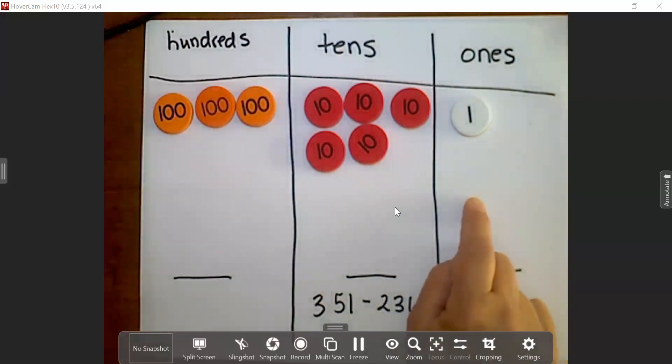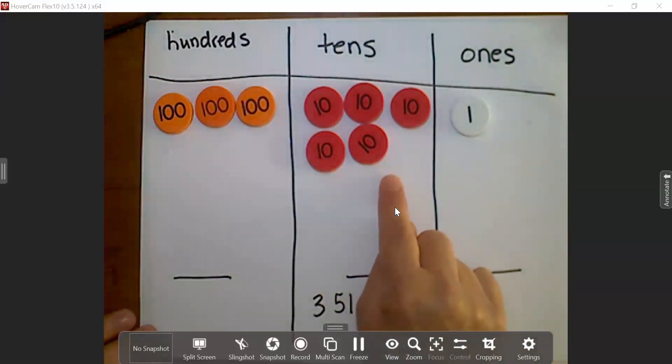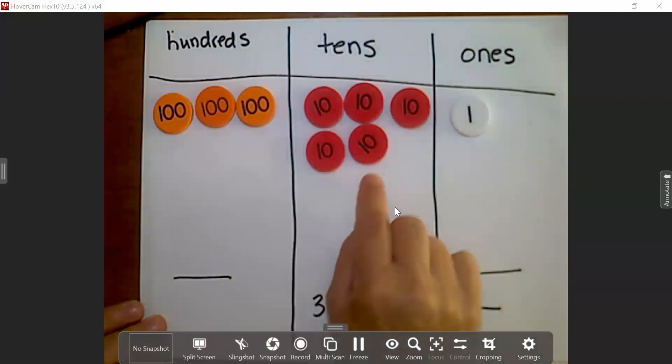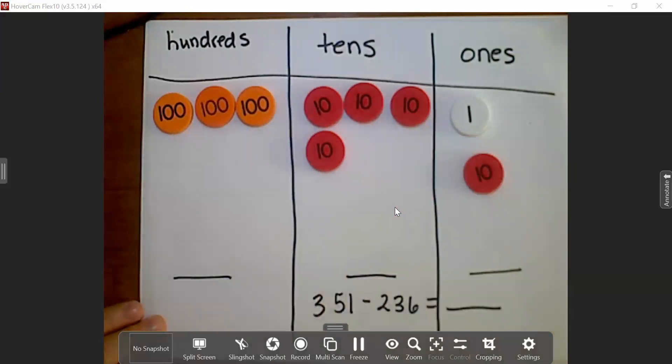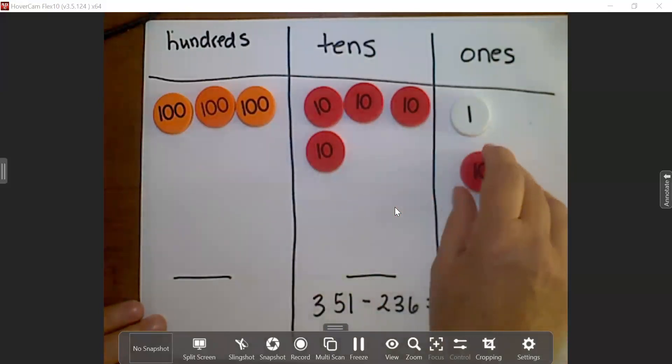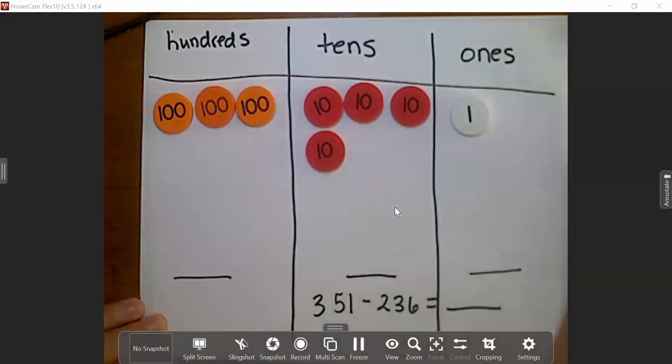That means I'm going to have to go next door to the 10s place, and I'm going to have to borrow a 10. I can't borrow just 6 ones. I have to take the whole 10. So I'm going to move my 10 over here, and I'm going to trade it for 10 ones. So I'm going to take out that 10. I'm going to put in 10 ones.